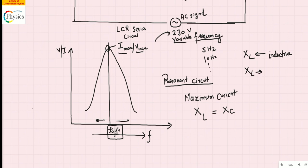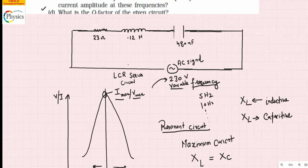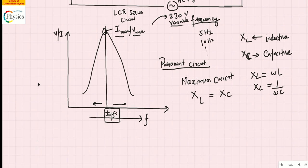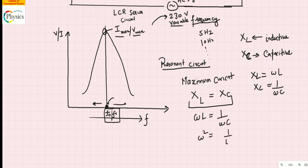Similarly, when a capacitor is attached to an AC signal it offers capacitive reactance XC. In an AC circuit, a condition comes when the two become equal at some frequency. XL is given by omega-L and XC is given by one divided by omega-C. We have to write the condition for maximum current amplitude: the resonant frequency happens when XL equals XC.